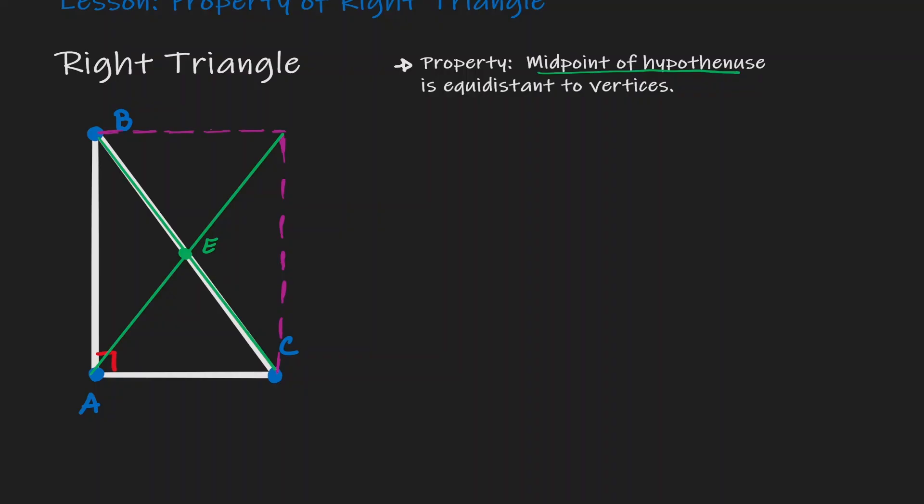Now, what are some properties that we know about diagonals in a rectangle? Diagonals bisect each other.